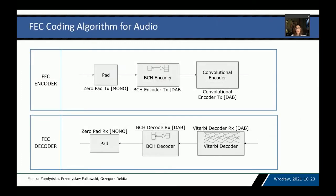In our system we use the forward error correction method, compliant with the DAB standard. In the transmitter we combine two encoders: a BCH encoder and a convolutional encoder. The coding efficiency is one-quarter. In the receiver we have the inverse operations: a Viterbi decoder and a BCH decoder.